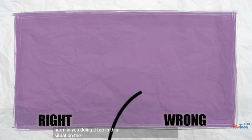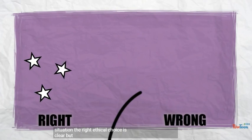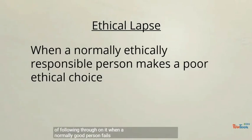In this situation, the right ethical choice is clear, but other factors get in the way of following through on it. When a normally good person fails to make the right choice in a situation such as this, it's called an ethical lapse.